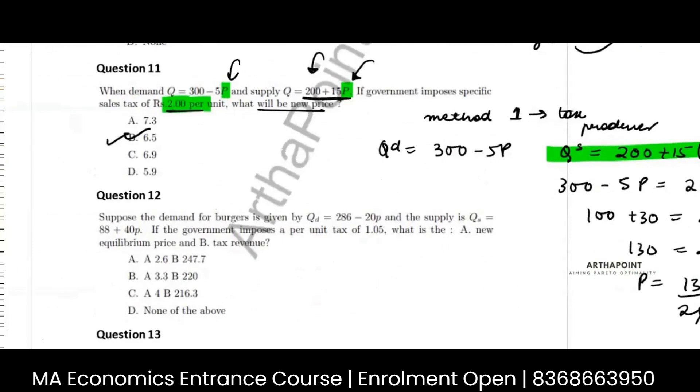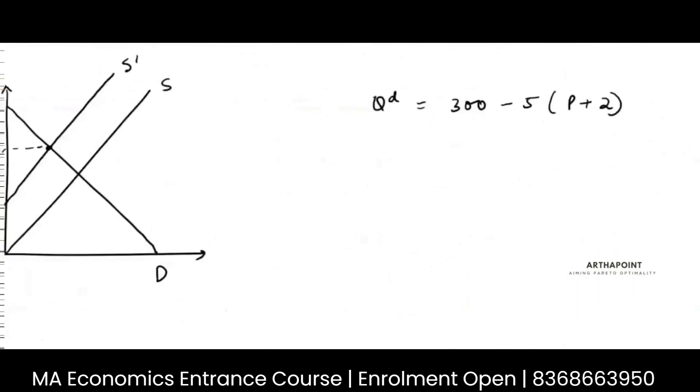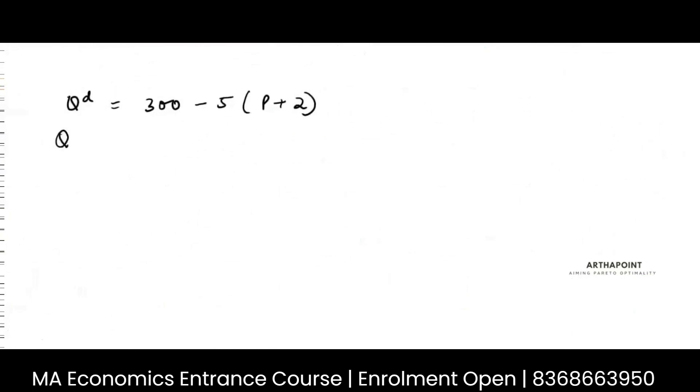And quantity supplied will be 200 plus 15P only. Demand has to be equal to supply.